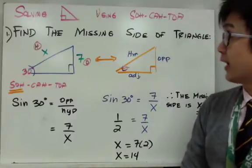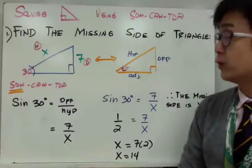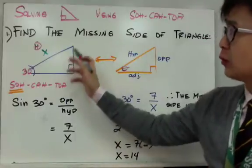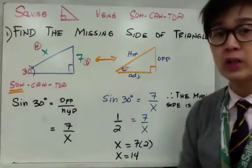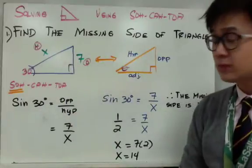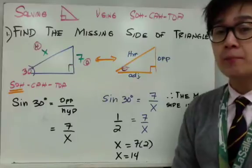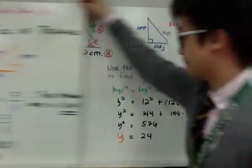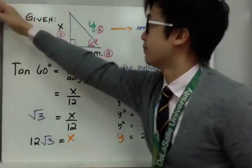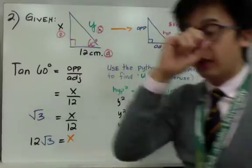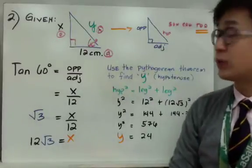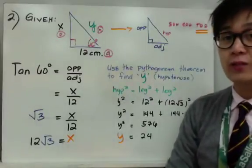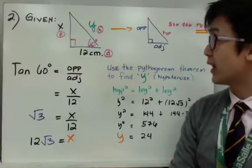That's how we solve a triangle when given one side and one angle to find a single missing side. But what if we need to find both missing sides?